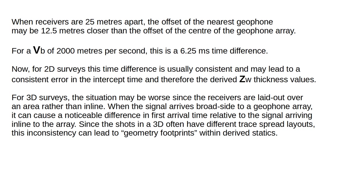For a base velocity of 2,000 meters per second, this is a 6.25 millisecond time difference. For 2D surveys, this time difference is usually consistent and may lead to a consistent error in the intercept time and therefore the derived weathering thickness values. For 3D surveys, the situation may be worse since the receivers are laid out over an area rather than in line.